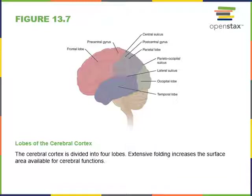The lateral sulcus forms the boundary between the temporal lobe and the parietal and frontal lobes. The central sulcus forms the boundary between the frontal lobe and the parietal lobe. The precentral gyrus is just anterior to the central sulcus and contains the primary motor cortex, a region of the brain that sends out motor commands to excite skeletal muscles. The postcentral gyrus is just posterior to the central sulcus and contains the primary somatosensory cortex, which receives and begins to process sensory information from the skin, including the sense of touch.